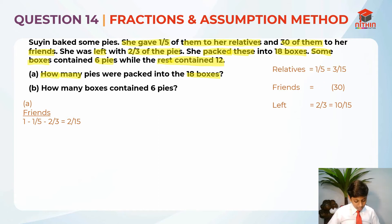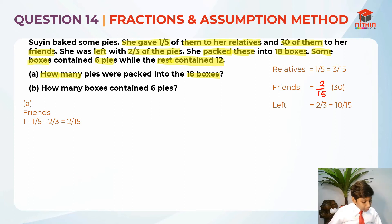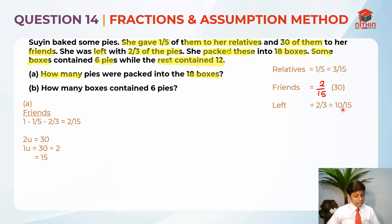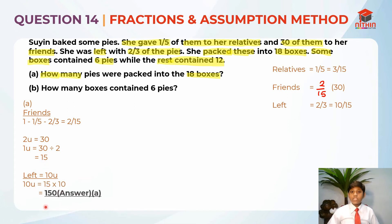Now we know something really important: 2 over 15 equals 30 pies. That means 2 units is equal to 30, so 1 unit is equal to 30 divided by 2, which is 15. Now it's easy — to find how many pies were packed into the 18 boxes, we need to calculate the left, which is 10 units. So 10 times 15 equals 150. So 150 is the answer for part A.